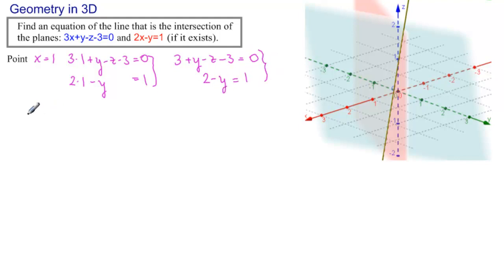The 3s cancel. The z goes on the other side. We have y equals z. And the second one, the 1 goes here. And we have 1 equals y. Substituting back, we have 1 equals z and 1 equals y. And we started with x equal to 1. So the point we have found is 1, 1, 1.